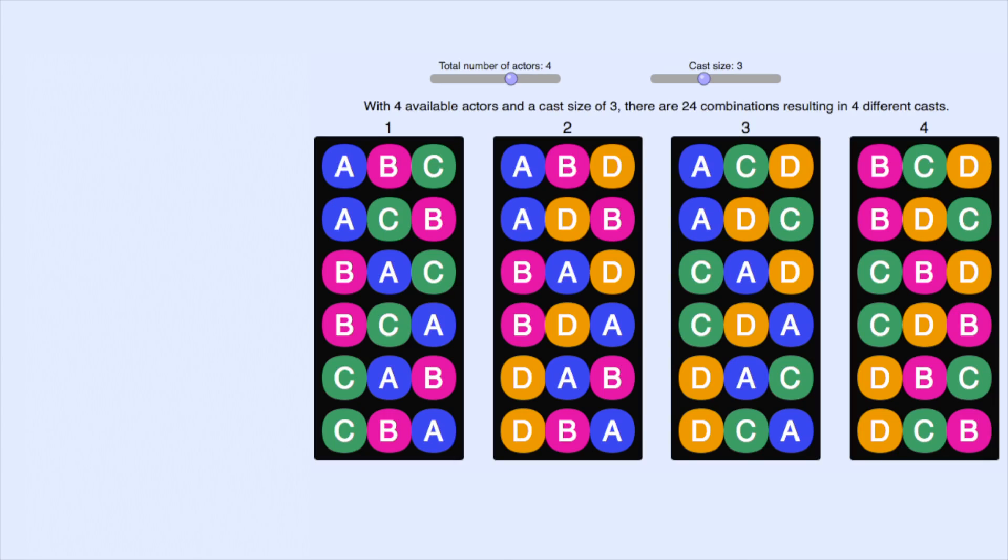To get a feeling for what's up, let's look at the first two boxes. Notice that in the first cast, or box, we have all possible orderings of A, B, and C.